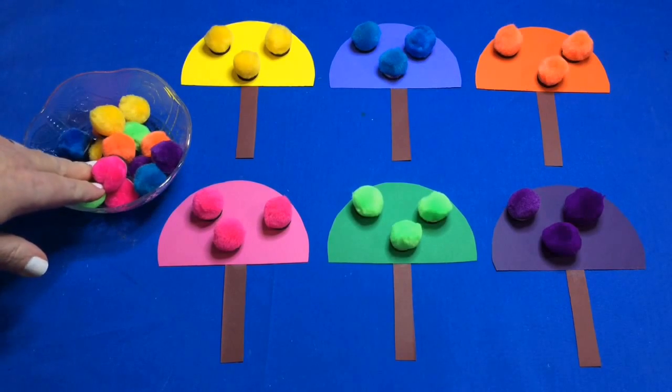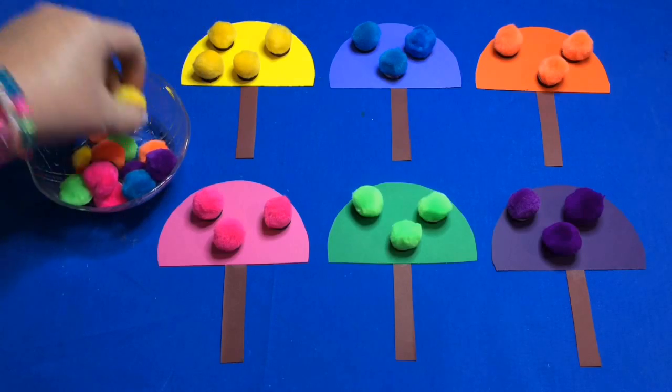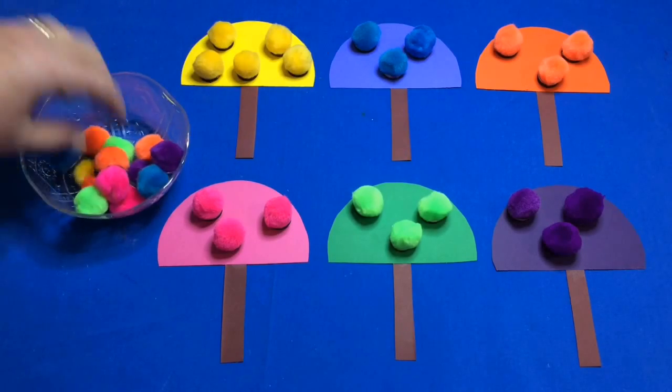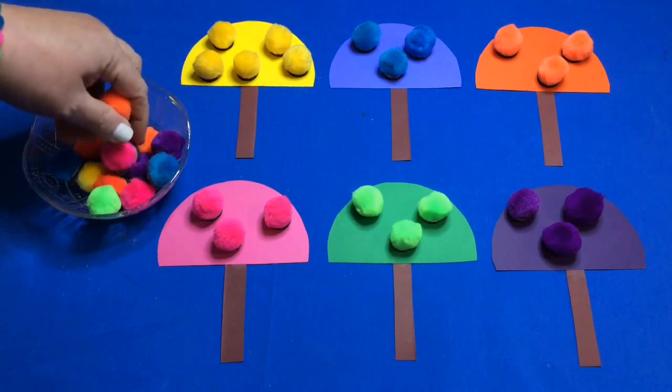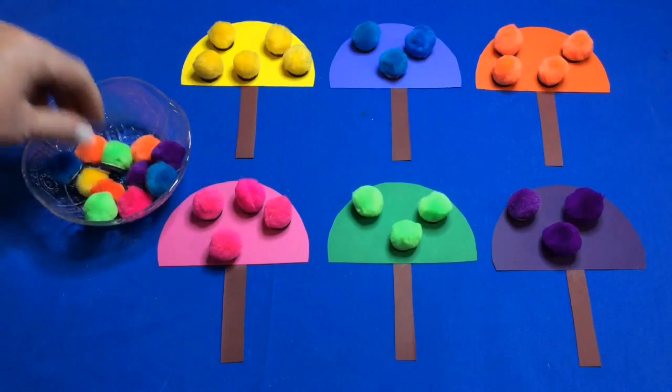Children come and sit down, pick out the pom-poms, and put them on the matching colored umbrella. They really enjoy these pom-pom activities, and they're excellent for fine motor skills development.